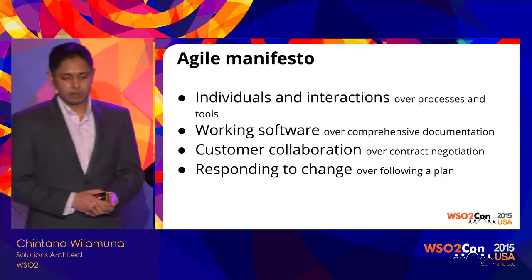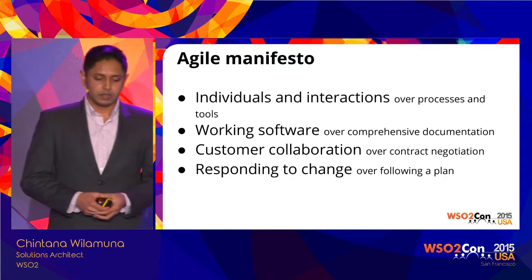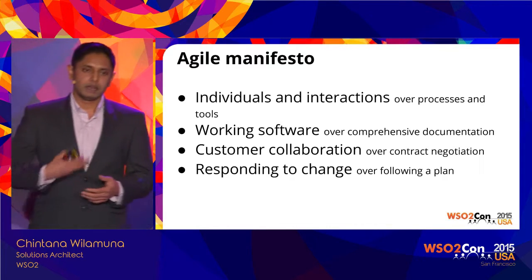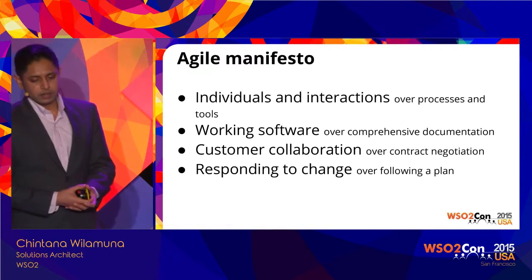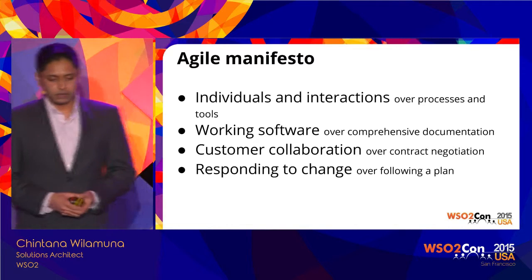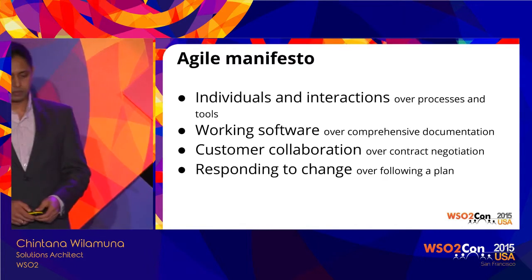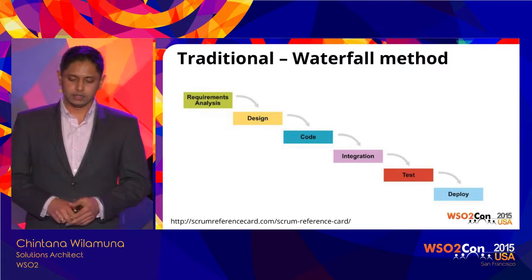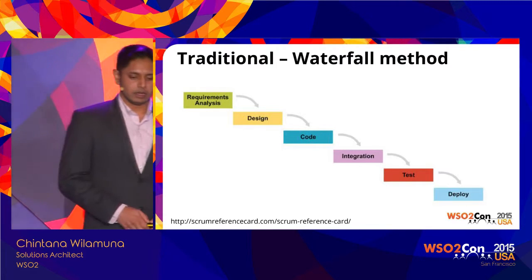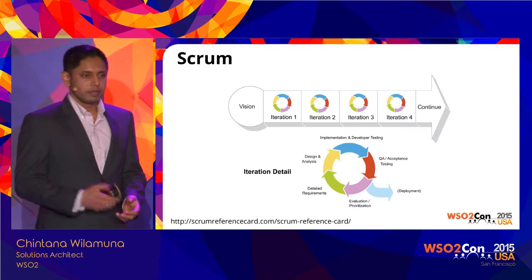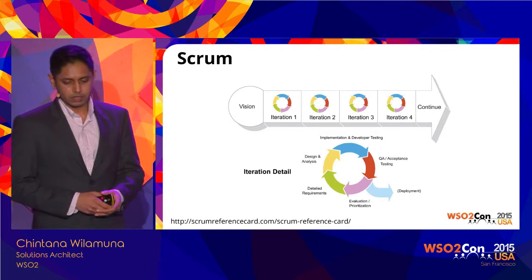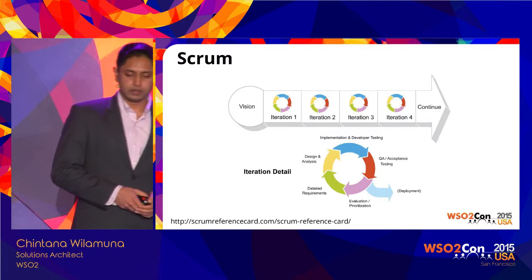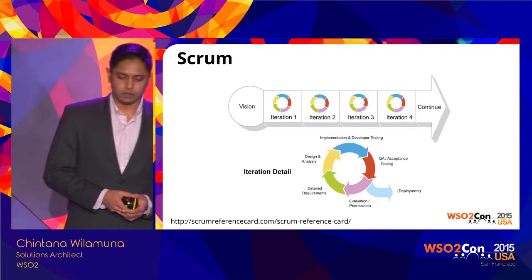A group of people got together and created the Agile Manifesto — basically saying that rather than trying to plan complexity, take an iterative approach. You value individuals and interactions over process and tools, working software, customer collaboration, and responding to change. In the traditional waterfall method you analyze, design, code, integrate, test, and deploy with no overlap between phases. Scrum is one method of agile methodology where in one iteration you plan, evolve, and deploy.